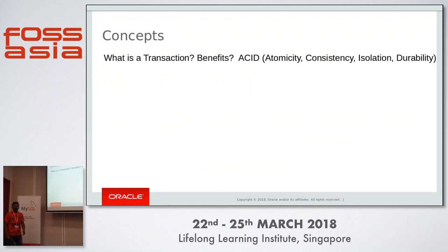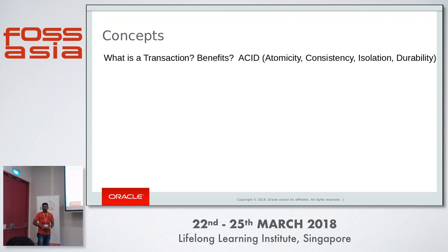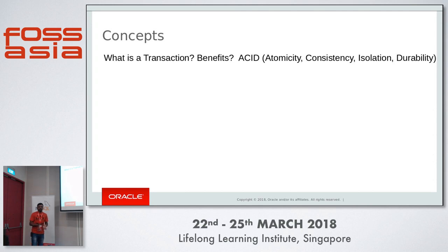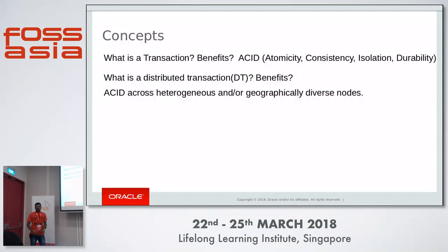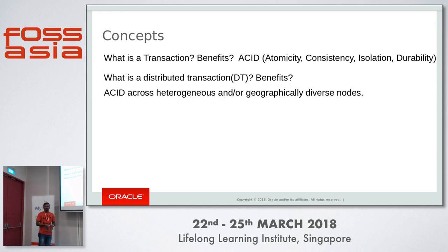Before starting, some basics: what is a transaction? A transaction is a set of statements or actions we need to execute to achieve a task. The importance of a proper transaction is that we need ACID properties. So what about distributed transactions? How is it different from a regular transaction? A regular transaction is executed in a single instance or one machine. A distributed transaction is executed across machines — whether geographically distributed or heterogeneous machines, or functionally different ones. But we need ACID properties on the transaction performed across these nodes.